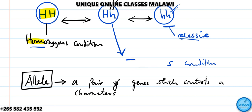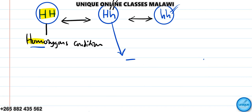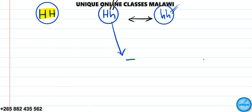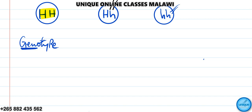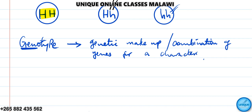Now let's look at phenotype and genotype. Genotype is the genetic makeup — the combination of genes for a character. When genes combine and control a character, that is what we call genotype.